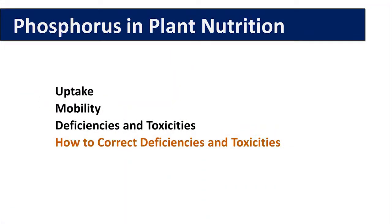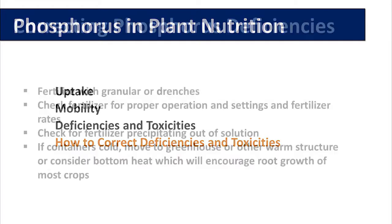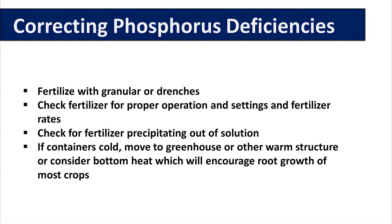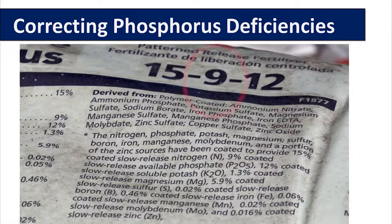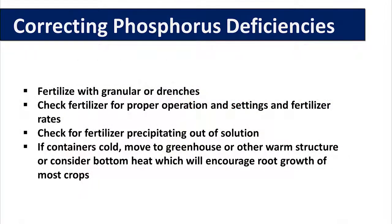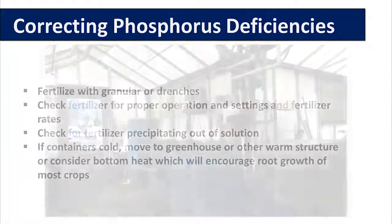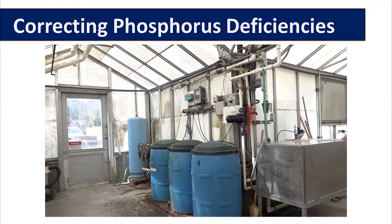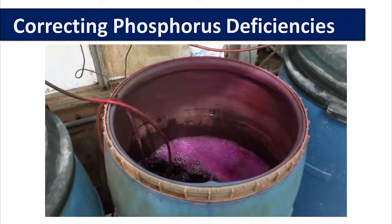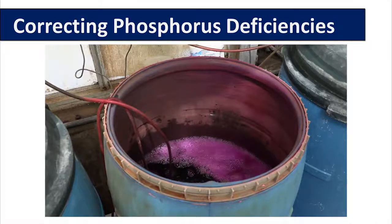To correct deficiency symptoms, check to make sure your fertilizers contain an adequate amount of phosphorus. Check your fertilizer injectors and check the fertilizer rates. Remember, phosphorus is the second number in the fertilizer bag NPK — check to make sure this value is high enough. Also check for fertilizer precipitating out of solution. If you are applying phosphorus in a nutrient solution it can often precipitate out with other chemicals, so make sure the solubility is compatible with other fertilizers you are using.